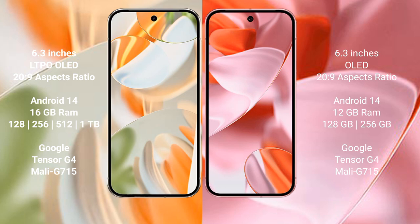Google Pixel 9 Pro comes with 16 GB RAM, with 128 GB, 256 GB, 512 GB, and 1 TB internal storage options, powered by the Tensor G4 processor with Mali GPU. Google Pixel 9 comes with 12 GB RAM, with 128 GB and 256 GB internal storage, also powered by the Tensor G4 processor with Mali GPU.